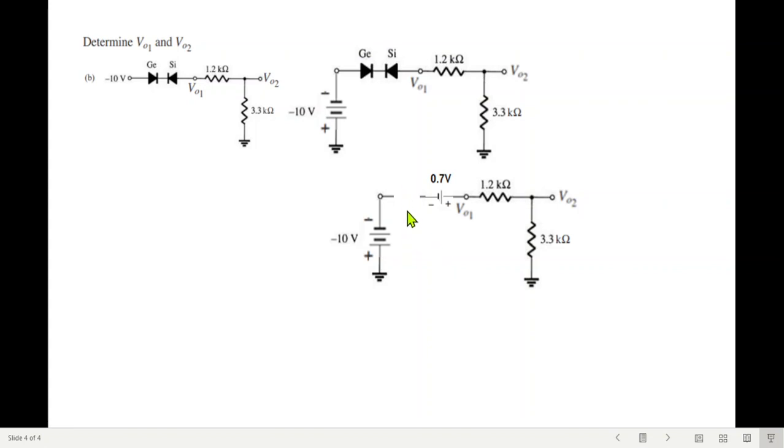Now you can see, because of the open circuit, no current can flow through this circuit. Therefore, the output voltage V01 will be 0 volts. And similarly, since no current is flowing here, therefore V02 will also be 0 volts.